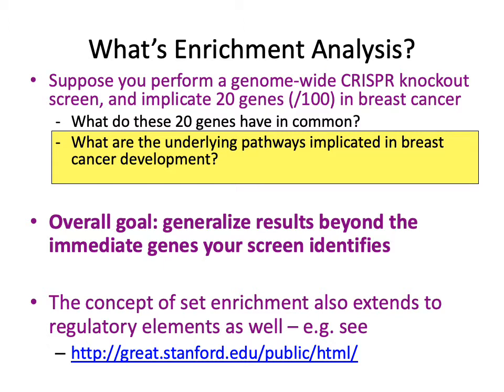While your knockout screen directly implicates individual genes and their involvement in breast cancer development, the goal of enrichment analysis is to generalize your results — to look beyond those 20 individual genes and make a statement about entire pathways that could be involved in your phenotype of interest, which in this case is breast cancer development. The next few slides will go into how exactly you can take those individual genes from your screen and identify entire pathways involved in your phenotype.